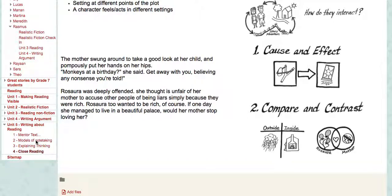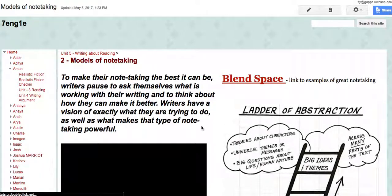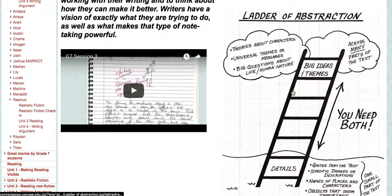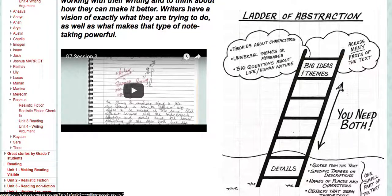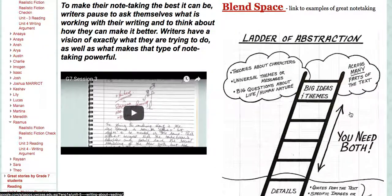You remember back on Monday that we were looking at this ladder of abstraction. And really the work was about taking really key details from the text and then seeing how we might think big to connect them with bigger ideas that might be running across the text — exact quotes, specific details, images, names of places, etc. — and looking to see how they connected to big ideas across the text.